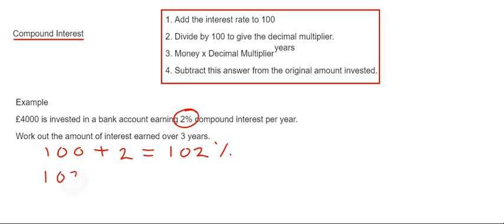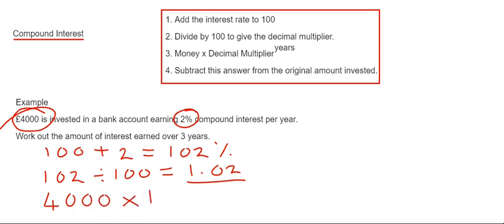We're now on to step three. We get the money which we invested, which is £4000, and we multiply this by the decimal multiplier. Since we're investing the money over three years, we put a power three on the 1.02, so it's 1.02 cubed. Type this in on your calculator.